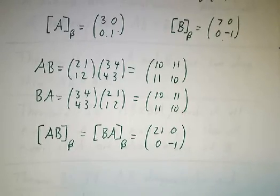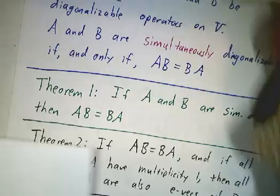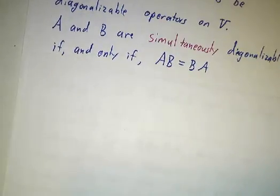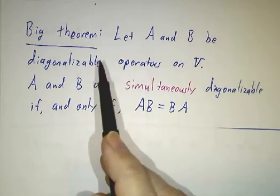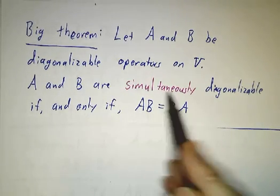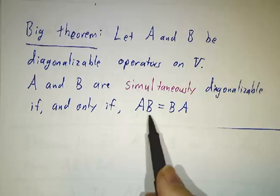Now, this is a general occurrence. So here's the rule about simultaneous diagonalization. Two matrices, if they're both diagonalizable, they're simultaneously diagonalizable if and only if they commute.